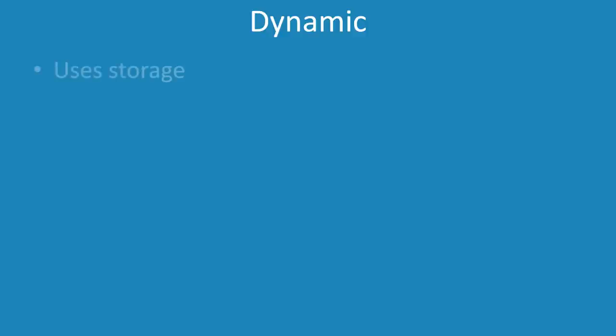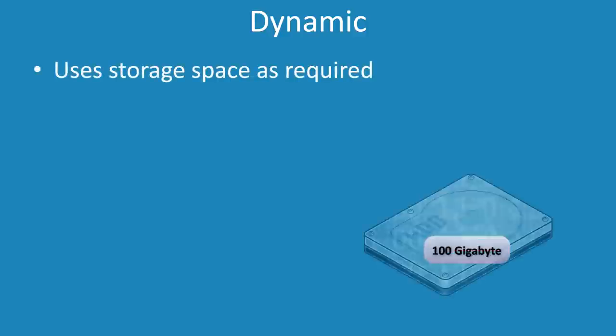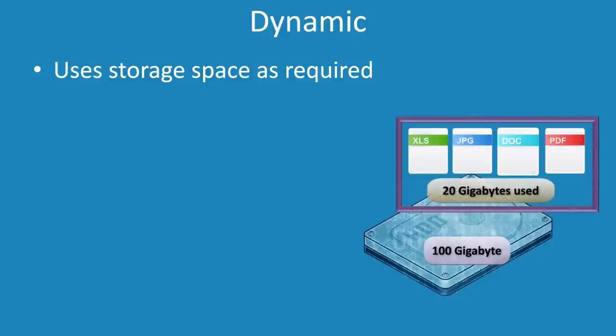The next type is dynamic. Dynamic uses storage space as required. For example, if you created a 100 gigabyte virtual disk, this could hold 100 gigabytes of data. However, the initial creation would use the bare minimum amount of space.